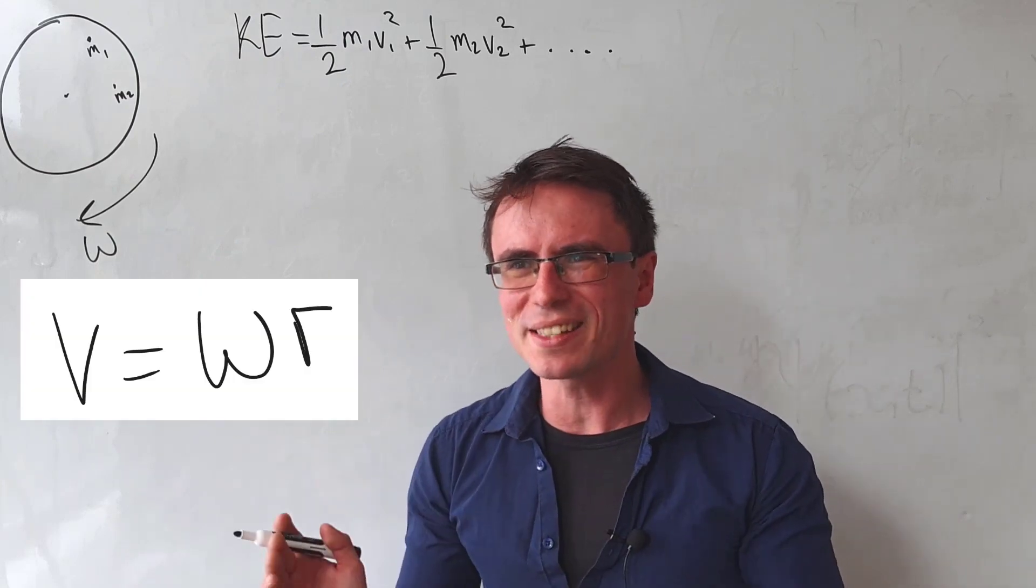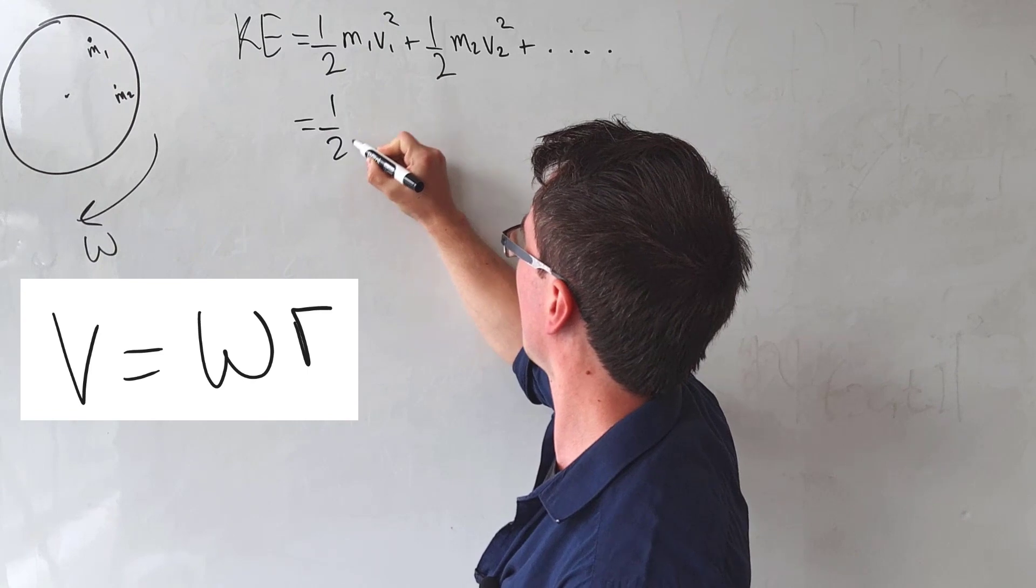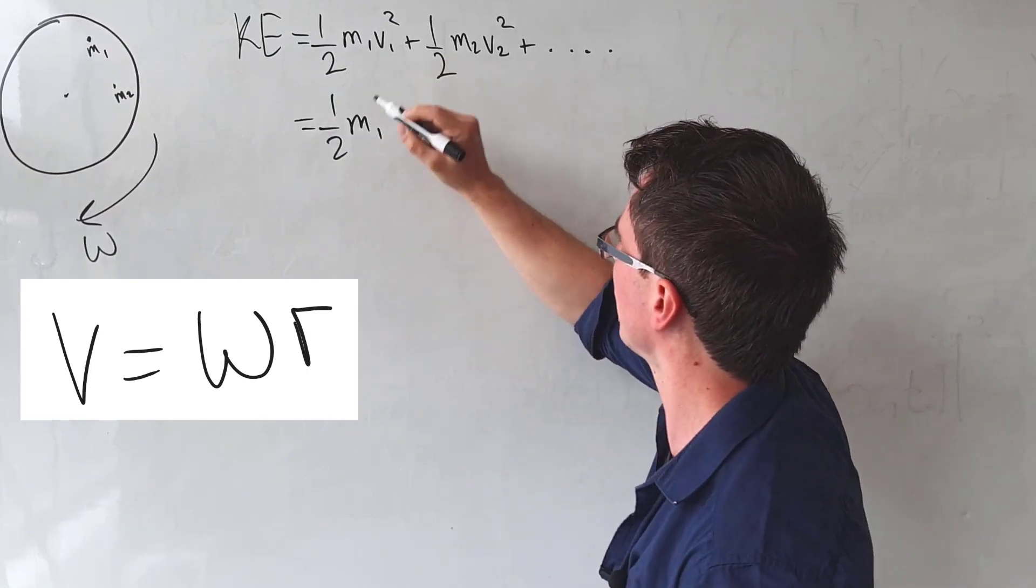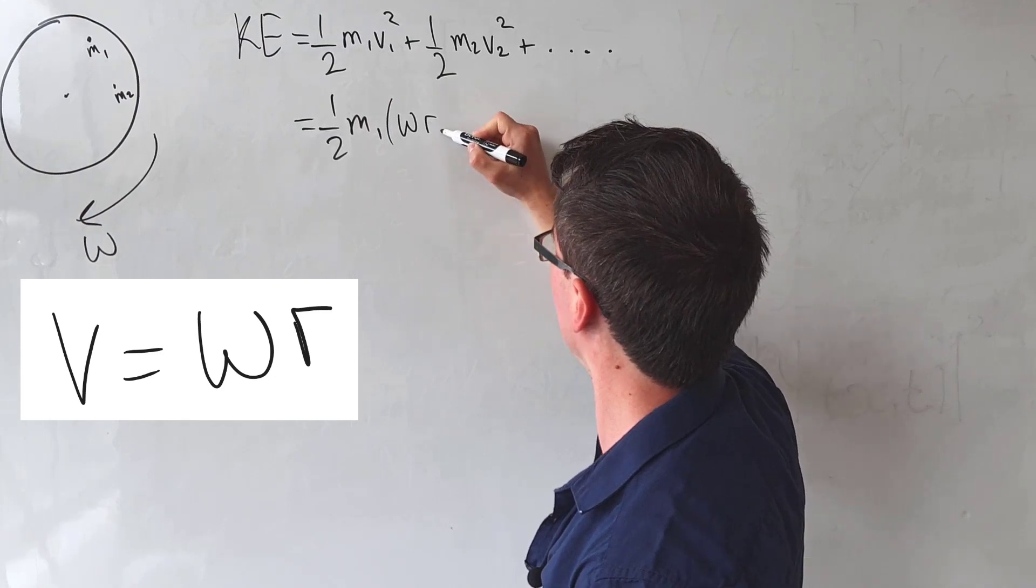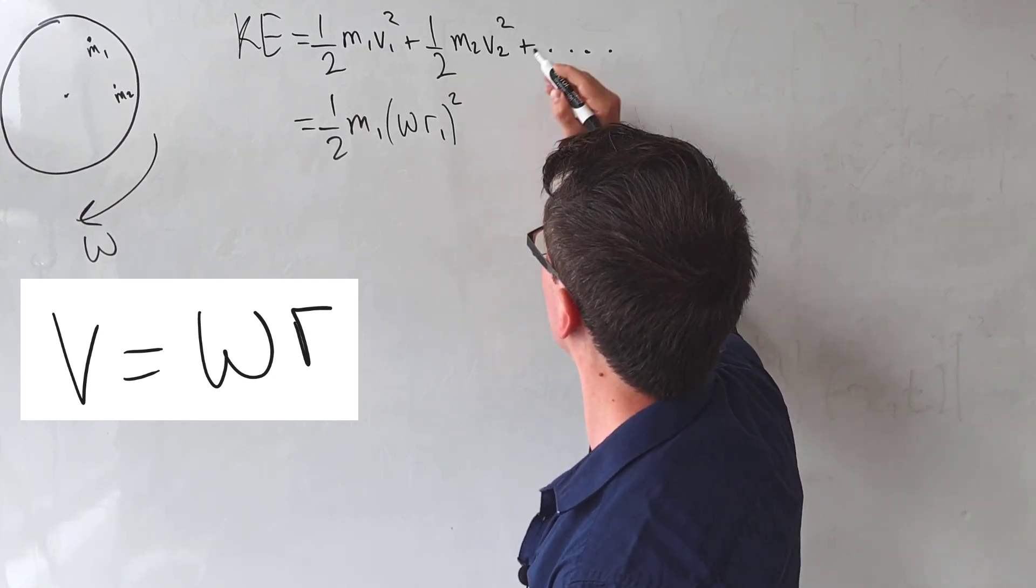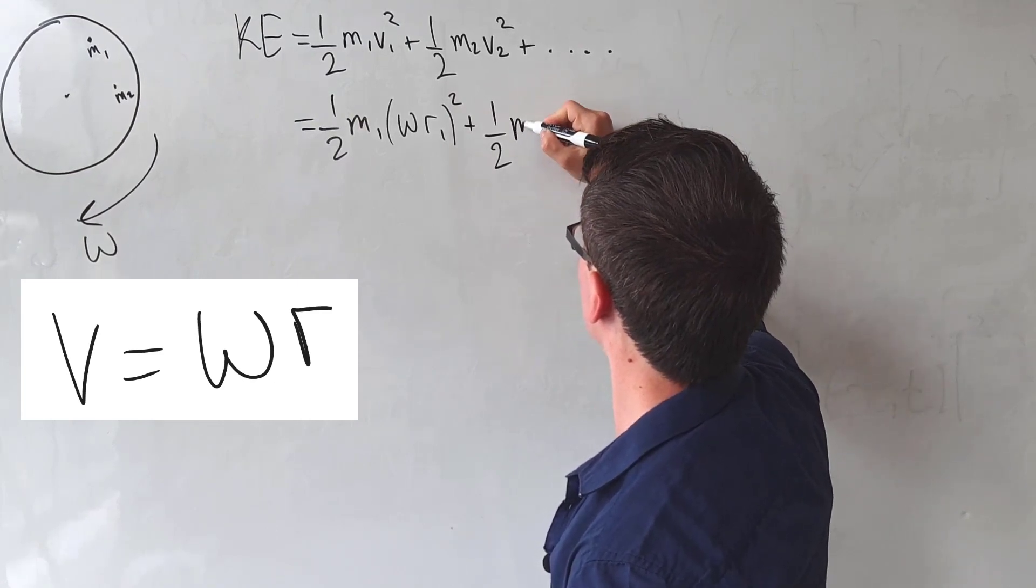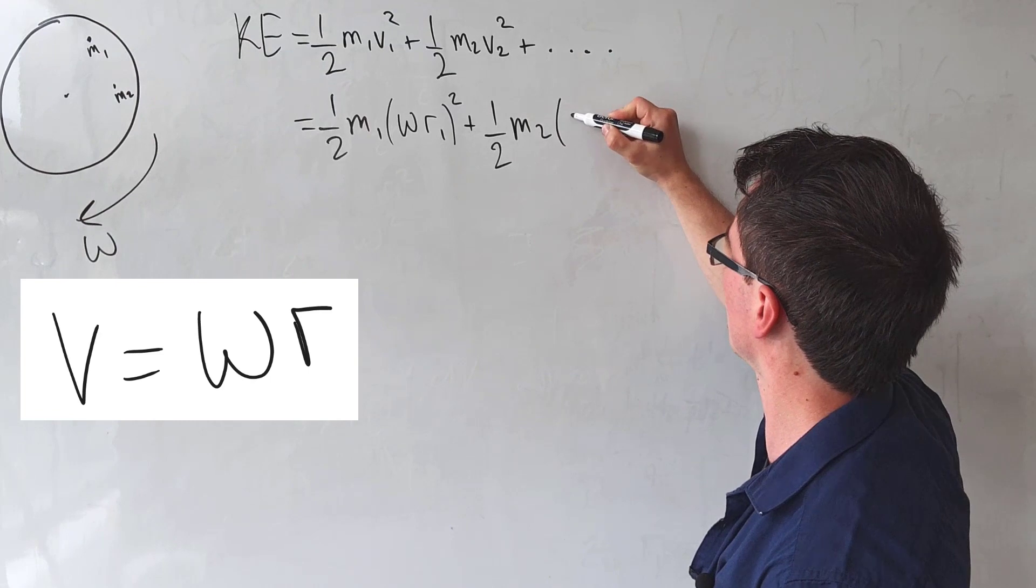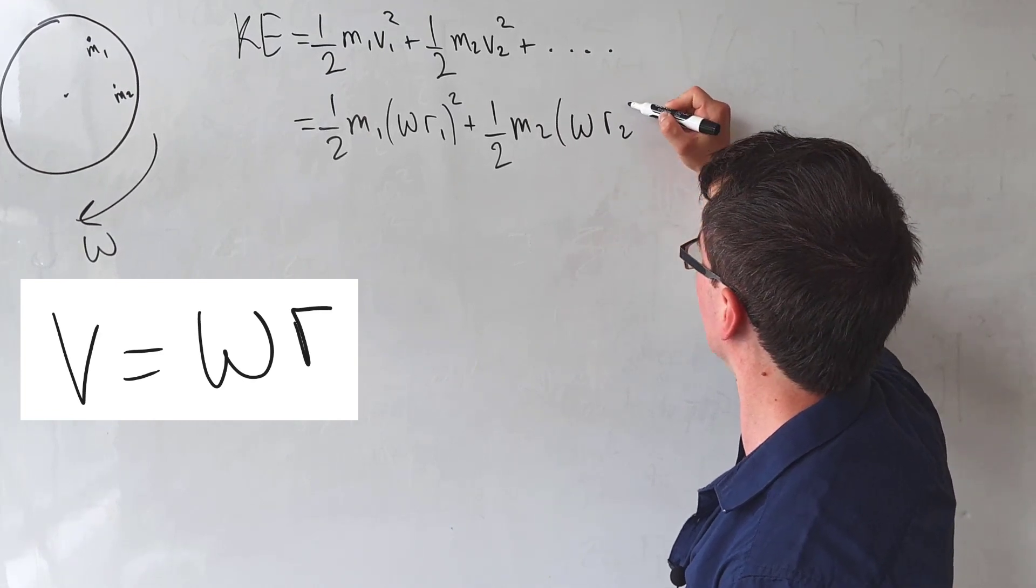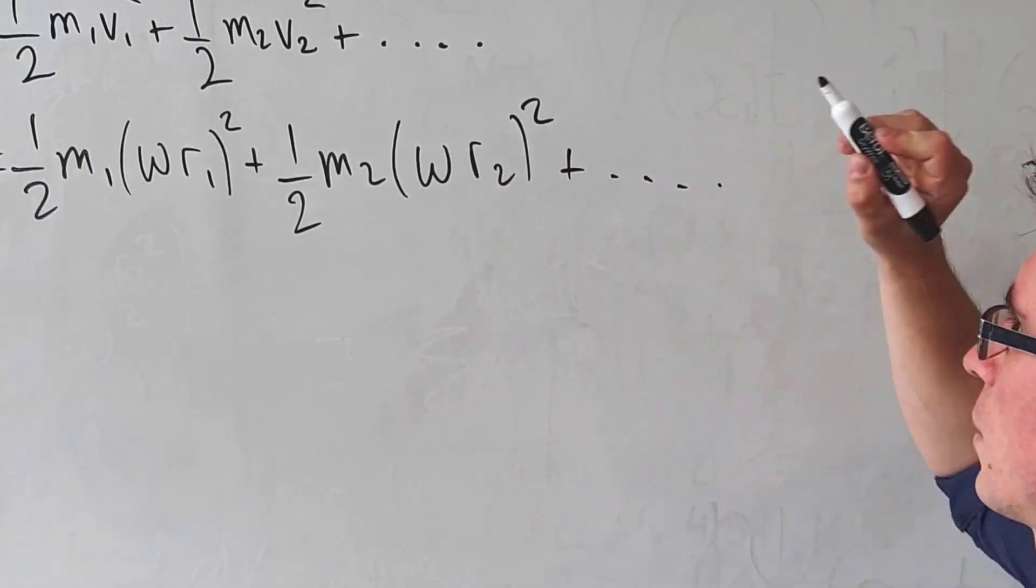Well, remember v is equal to omega r. Therefore we can say that a half m1, now rather than v1 I'm going to write omega r1 squared, plus a half m2 and rather than v2 I'm going to write omega r2 squared plus dot dot dot.